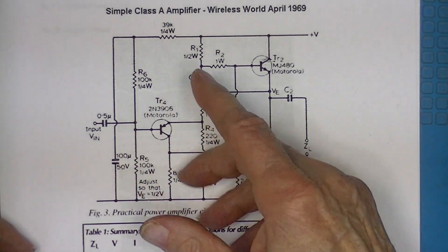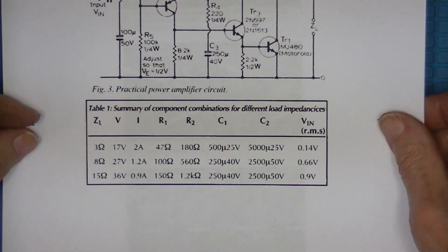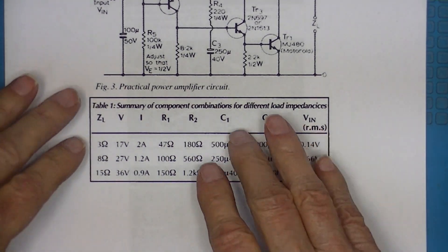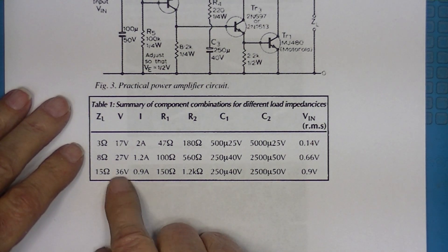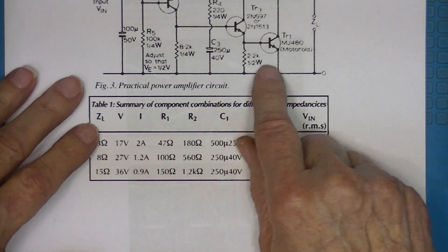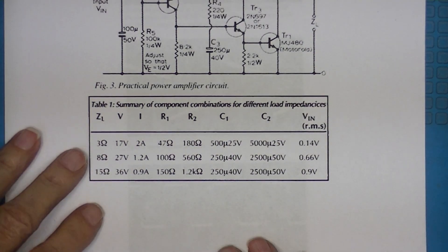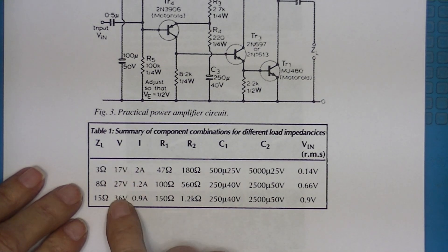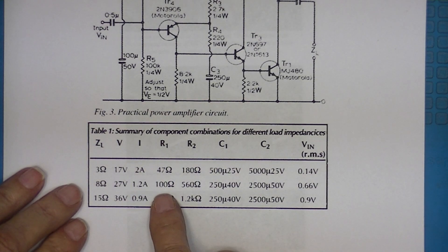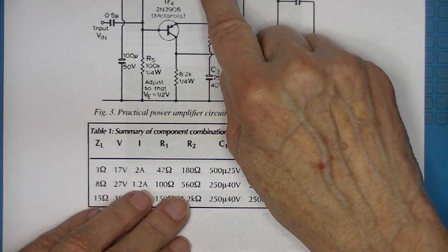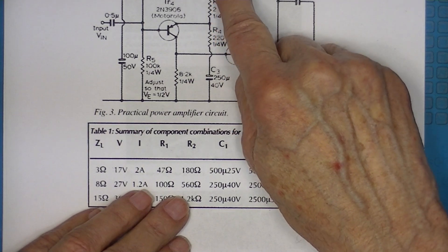The load is normally a speaker connected across this. I cut and pasted the original amplifier circuit from the article and also this table, which shows that for values of ZL of 3, 8, or 15 ohms, he recommends various voltages, various currents, and values for R1 and R2.